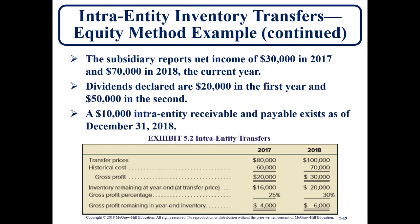Now we are looking at 2018 — that is the calendar year for which we'll be preparing our financial statements. In 2018, we have net income of $70,000, dividends of $50,000, and also note the intra-entity transfers.